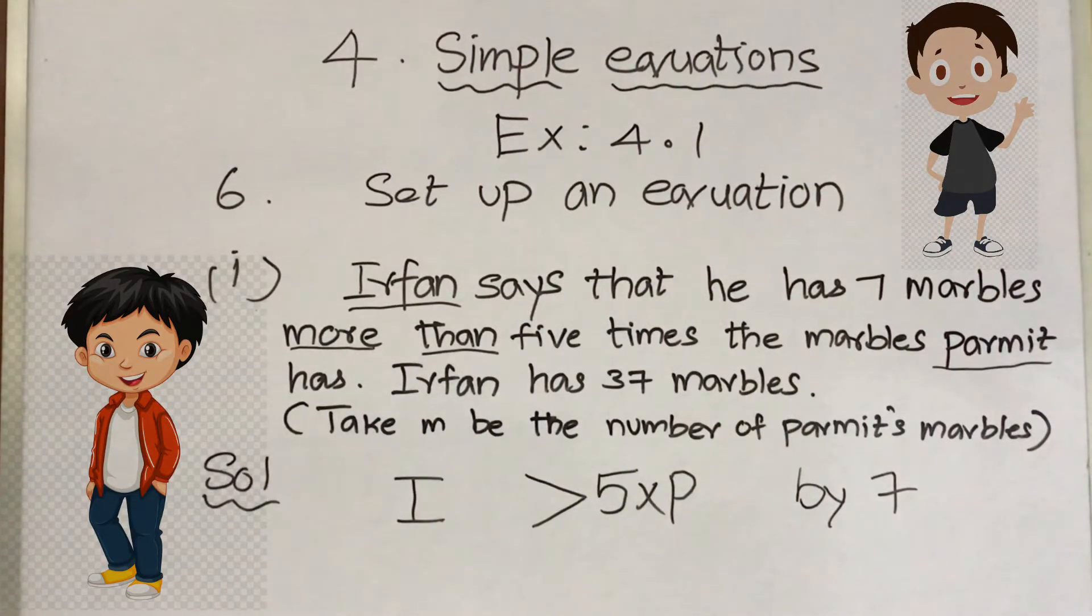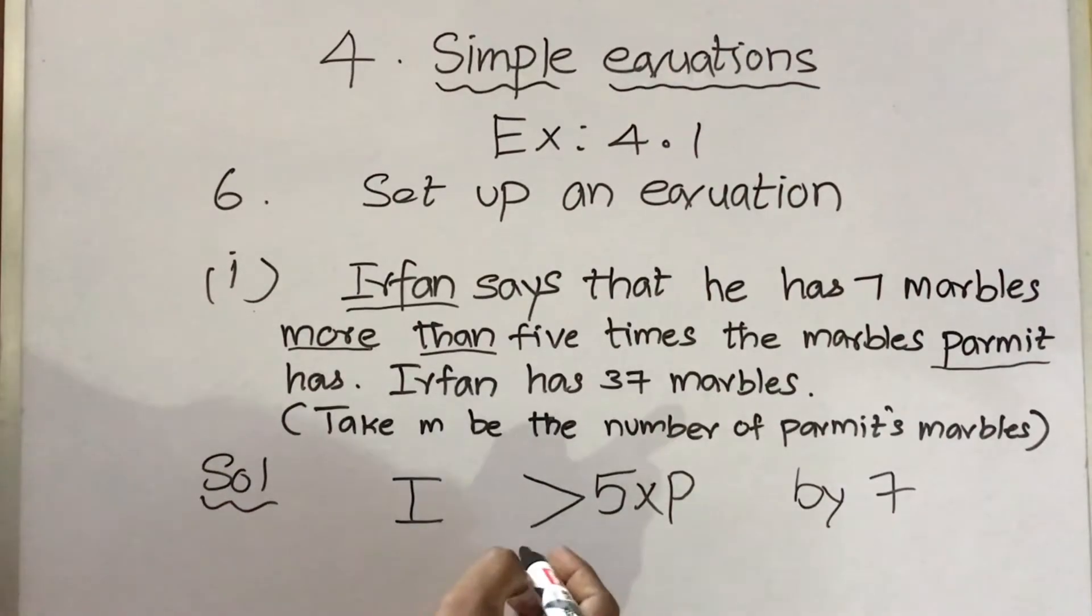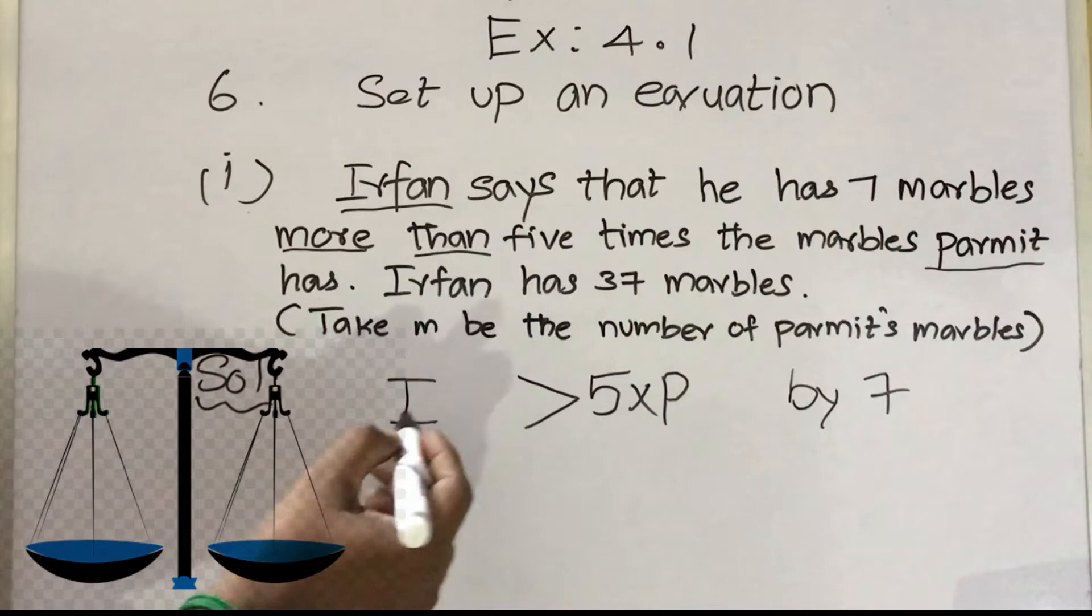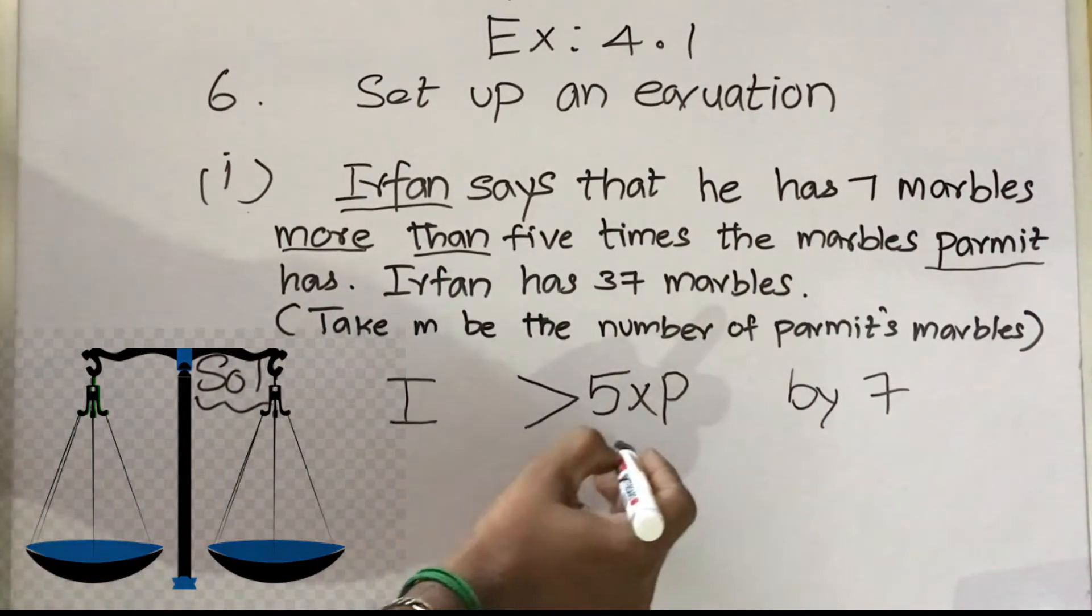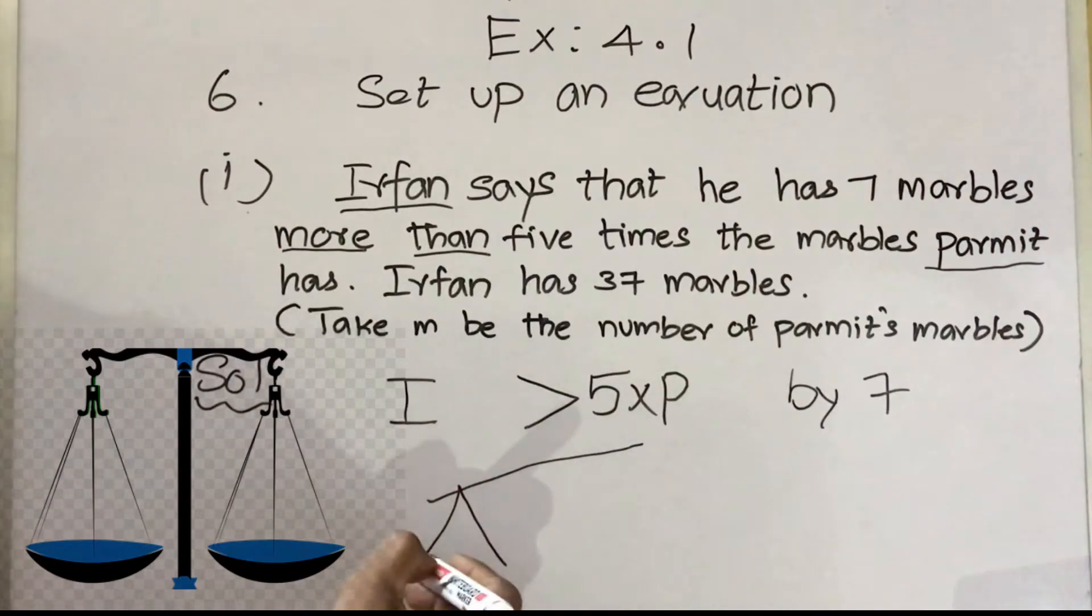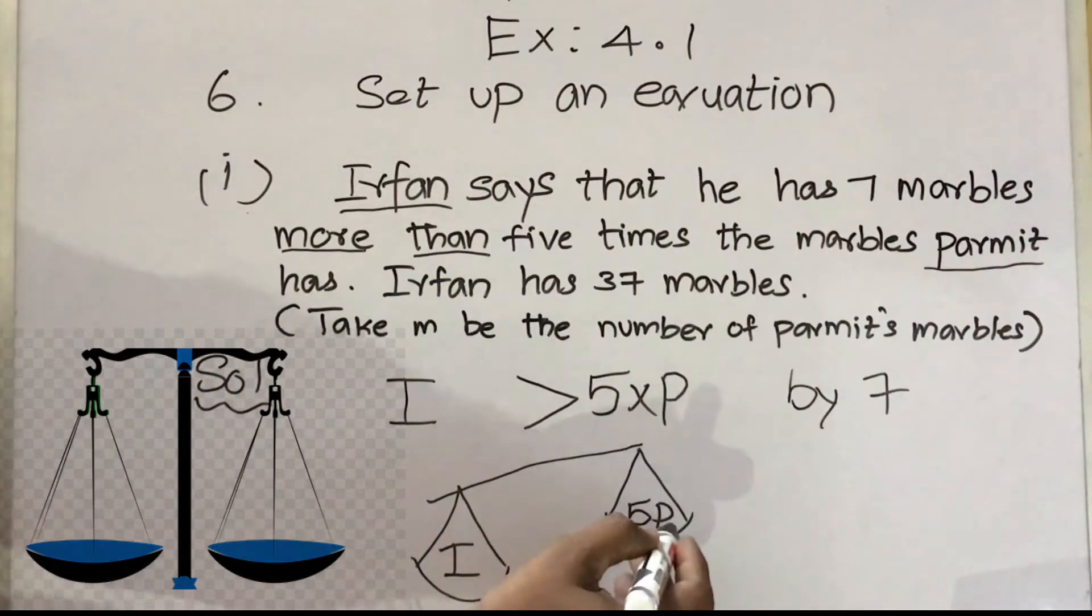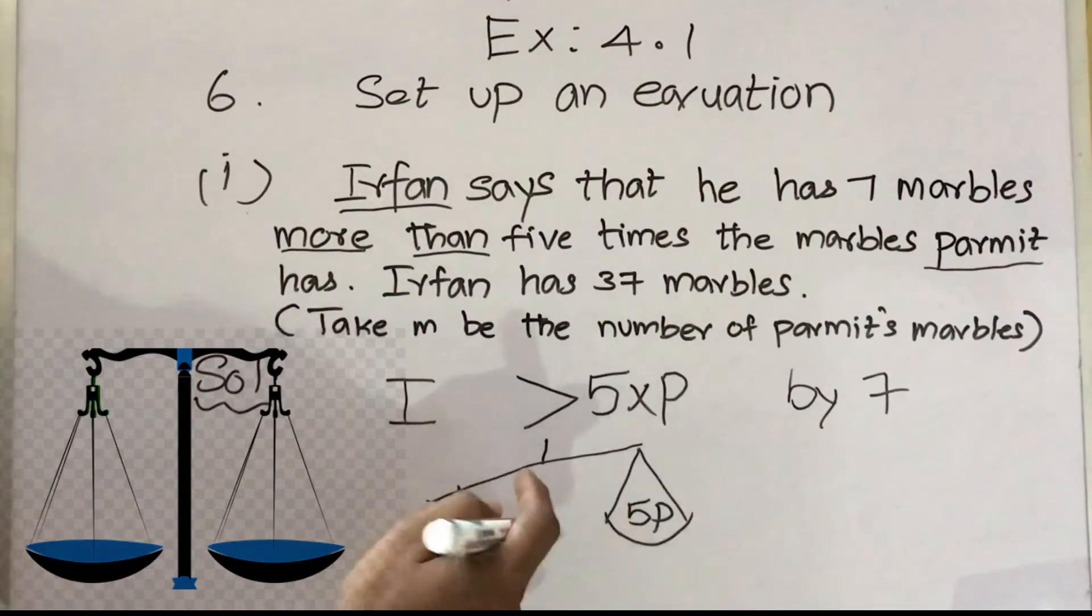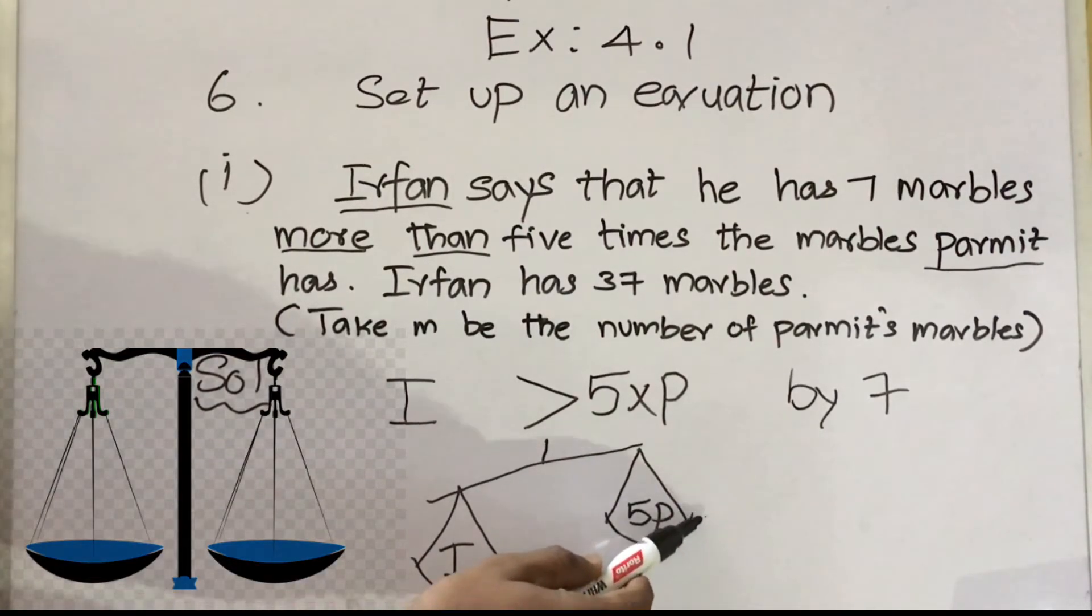Next we have to balance these two terms. Just imagine that I'm having a physical balance. I is greater than P, so in a physical balance if the weight is greater then the balance goes down. Draw a simple diagram. I is greater so it goes down, and 5P is lesser so it is a little bit up. I is greater than 5P by seven, so we have to balance this. What we do: I is just greater by seven more marbles, so we have to add seven here, then automatically it will be balanced.